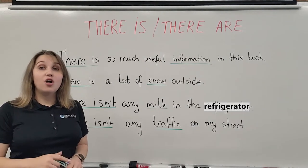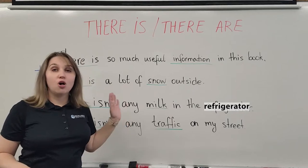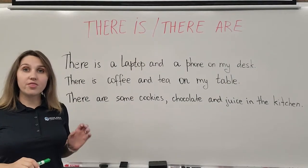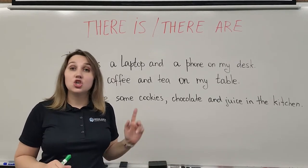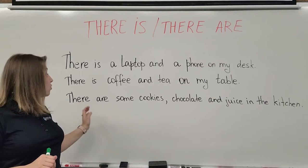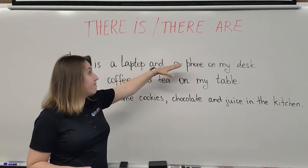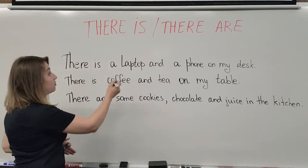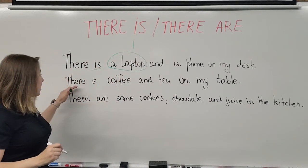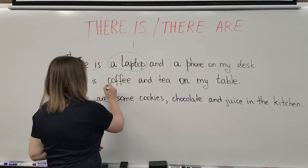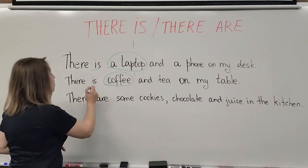So remember, if you have non-count nouns — like for example information, snow, traffic — those nouns are used with the phrase 'there is.' Whenever the phrase 'there is' or 'there are' is followed by two or more nouns, the verb form 'is' or 'are' agrees with the first noun. For example: 'There is a laptop and a phone on my desk.' Since the phrase is followed by a singular noun — one laptop — we use 'is.' Again: 'There is coffee and tea on my table.' Coffee is a non-count noun and therefore singular, so we use 'is'.